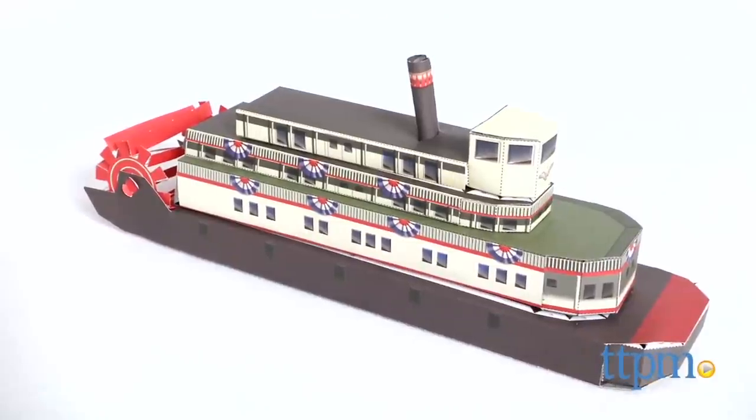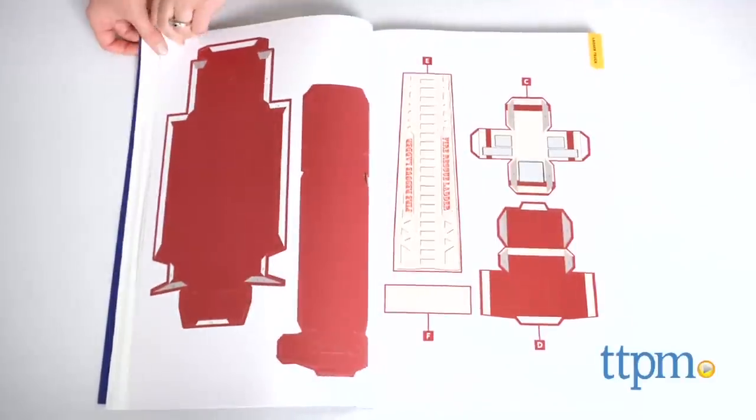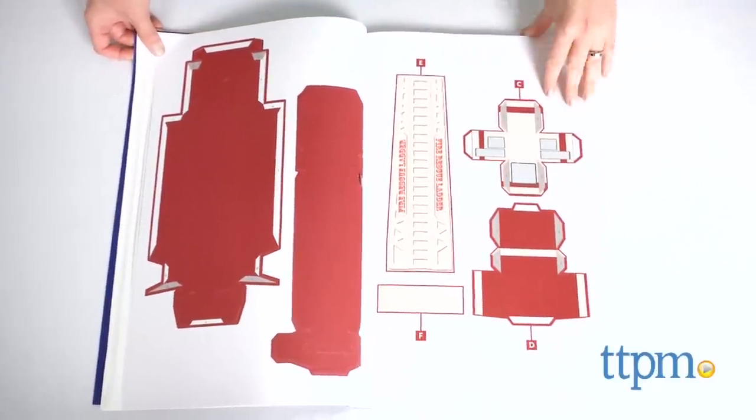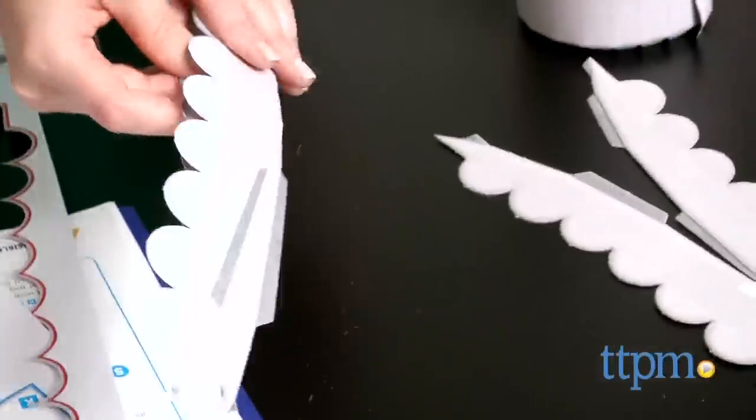The models are printed on sturdy cardstock, perforated to pop out and fold, require only gluing, no tape or pins, and come with step-by-step instructions. Glue is not included with the book.